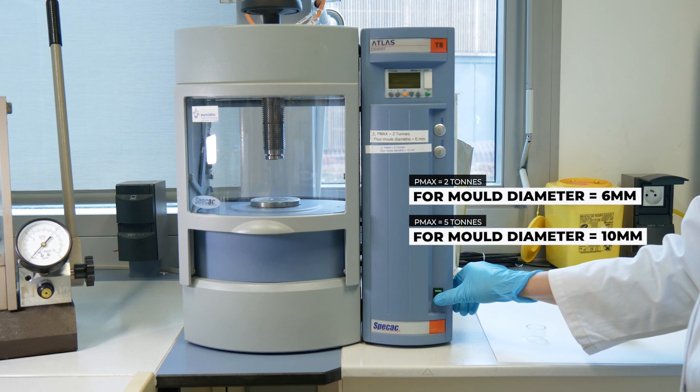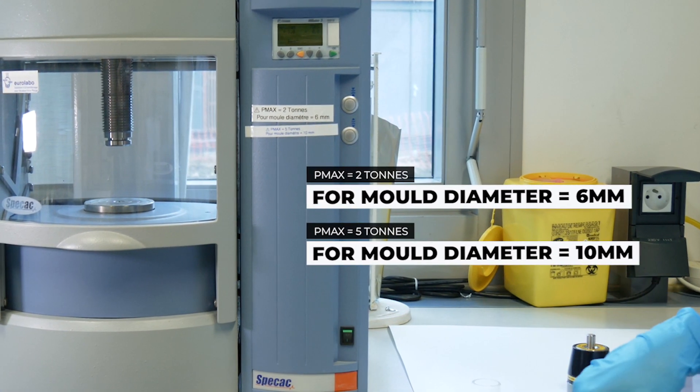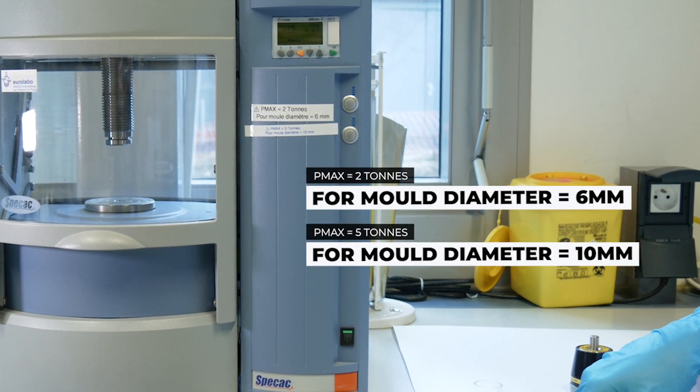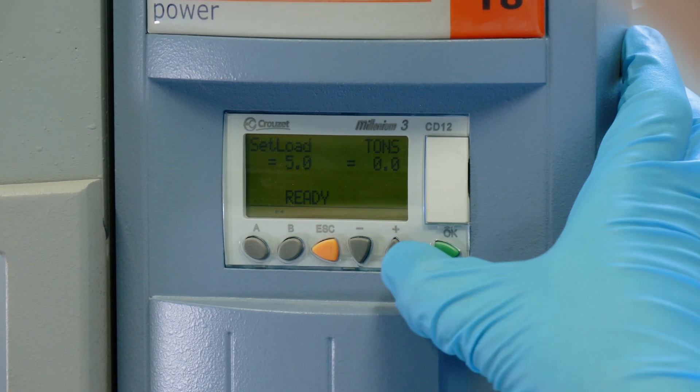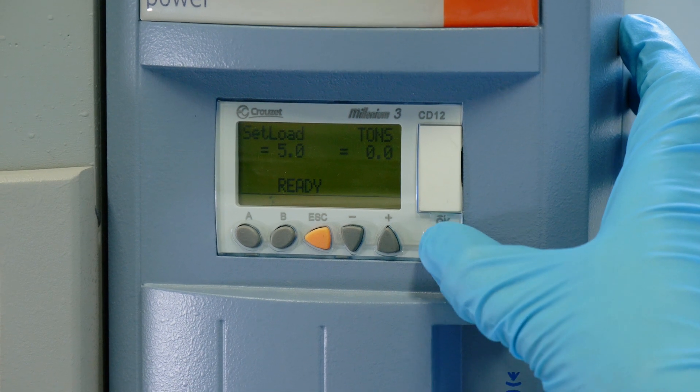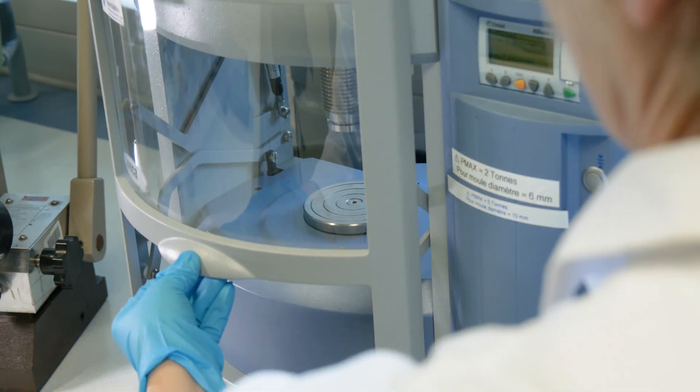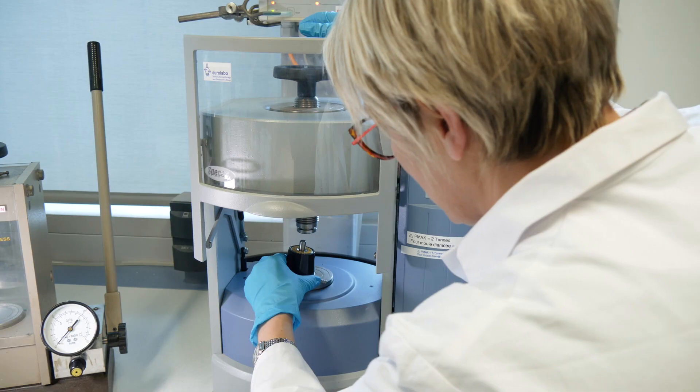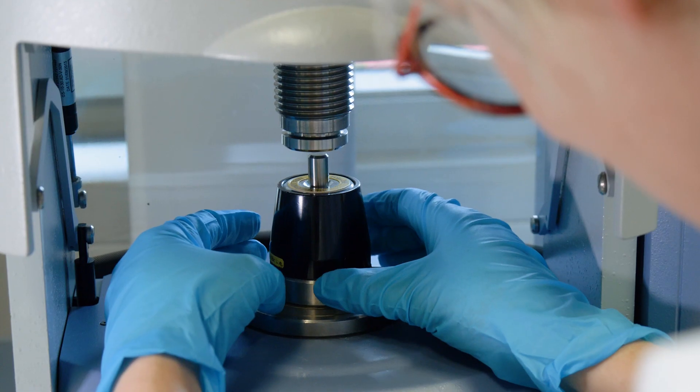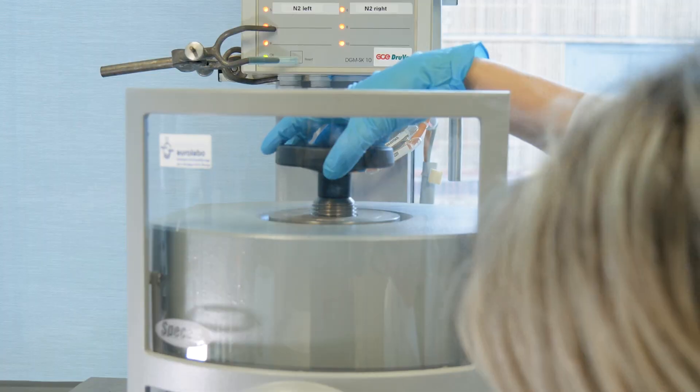Set the maximum load in tons according to the diameter of the pellet to be produced. Lift the safety cover and install the pellet die set into the hydraulic press, taking care to centre it.